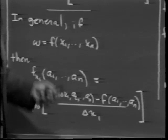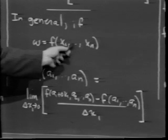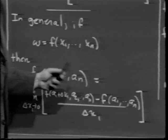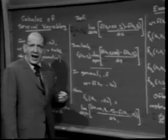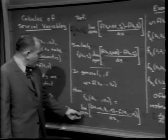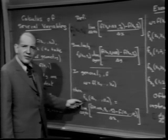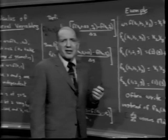This I can do for any number of variables, provided they're independent. If x sub n could be expressed in terms of the remaining x's, how can I hold a sub n constant while varying the others? If one variable depends on the others, they are related in their motion. Analogous definitions hold for f sub x2, f sub x3, et cetera. Once you see a few examples, the mystery vanishes.